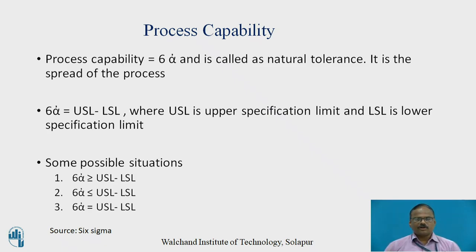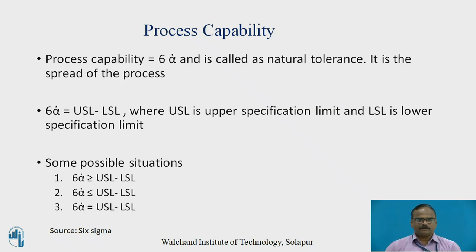Process capability is also called as six sigma dash, which means 99.7% of the components should follow the normal distribution curve. It is called natural tolerance and also the spread of the process. Six sigma dash is the process capability where USL is the upper specification limit and LSL is the lower specification limit, and the difference between these two will decide whether the process is within control or not.